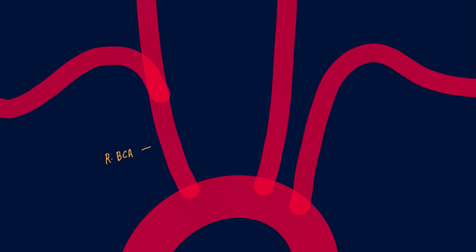The right subclavian artery arises from the right brachiocephalic artery, which bifurcates at about the level of the right sternoclavicular joint into the right subclavian artery and the right common carotid artery. The left subclavian artery arises directly from the aorta.